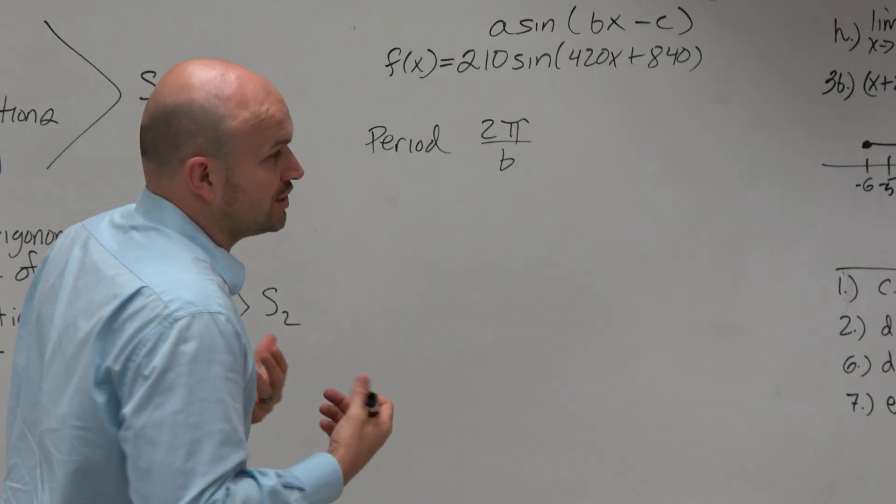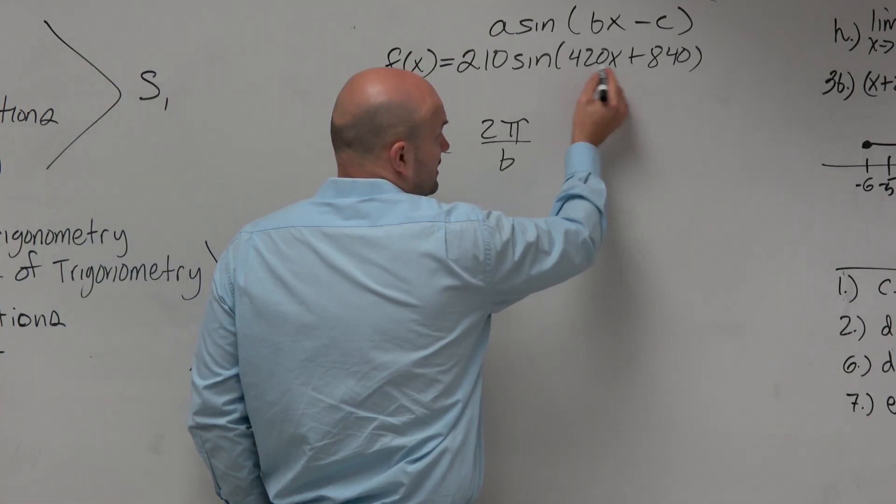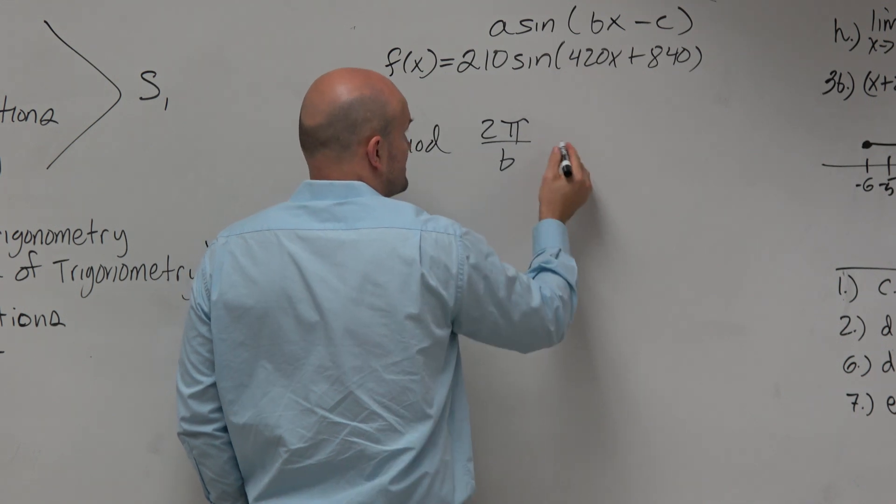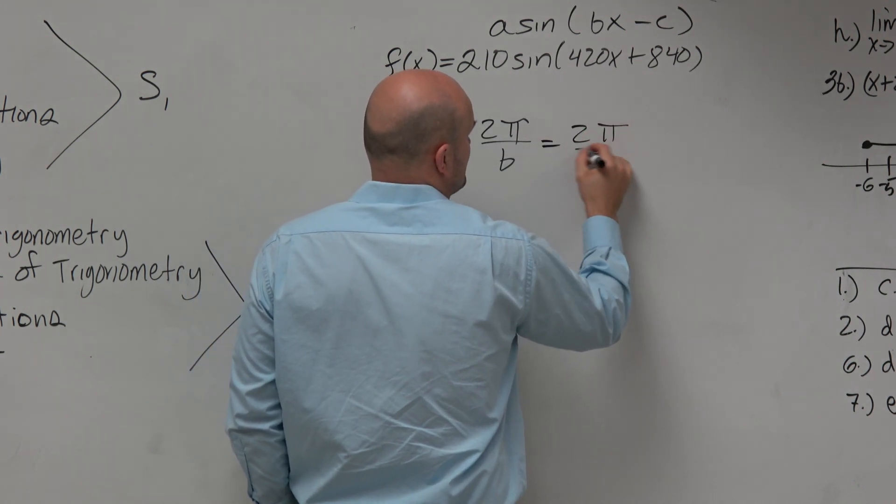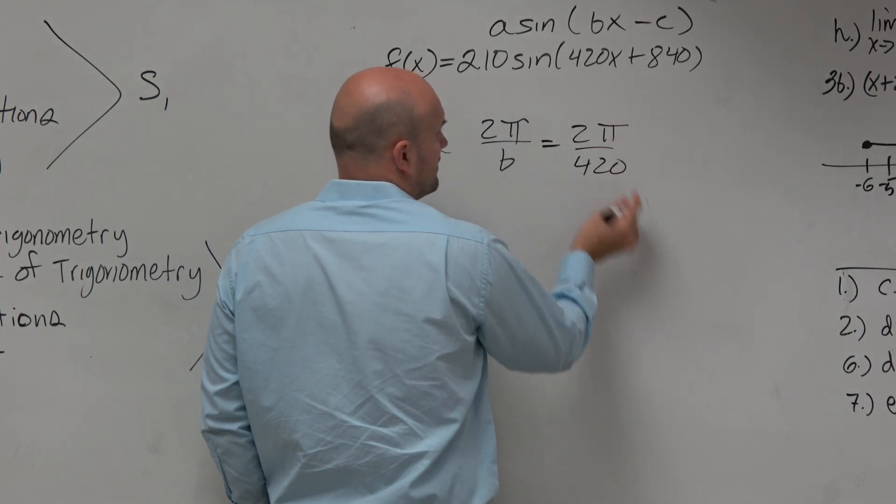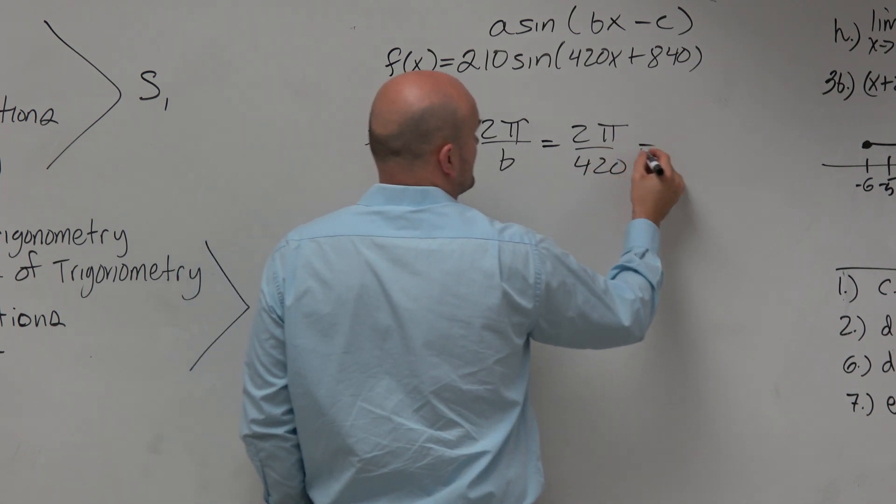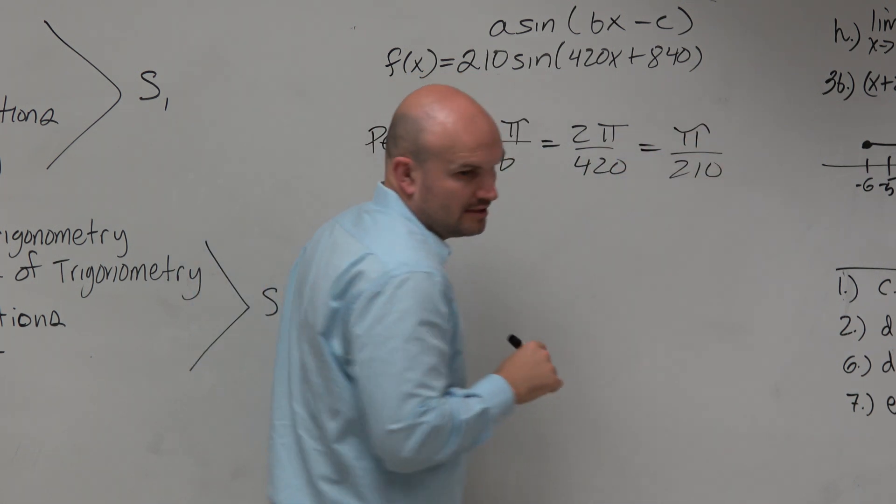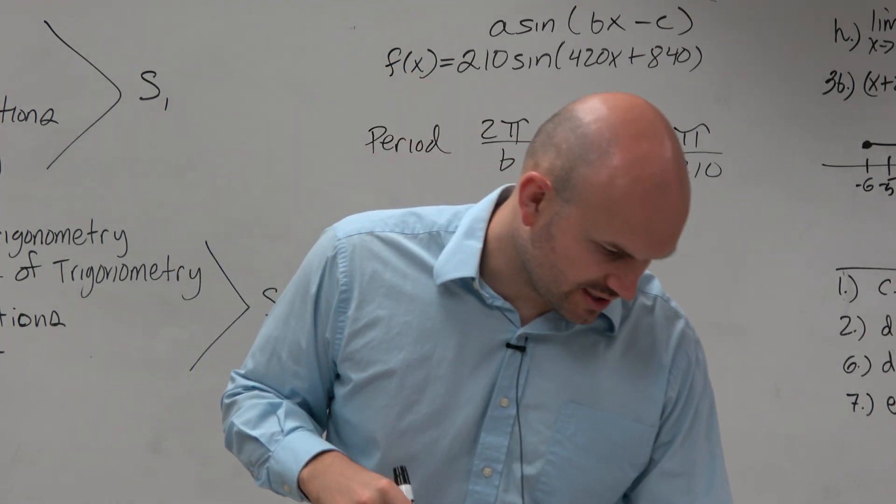So b is the coefficient of our linear term inside x in this case. Therefore, we have 2π divided by 420. That can be reduced to π over 210, which is, do we see, C? Is that an answer choice?